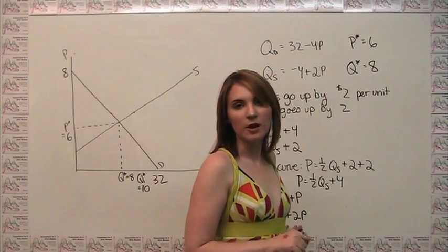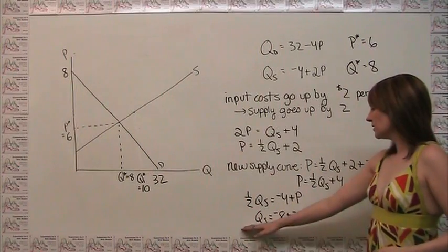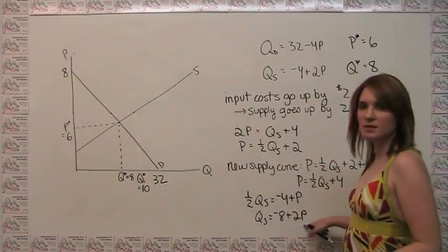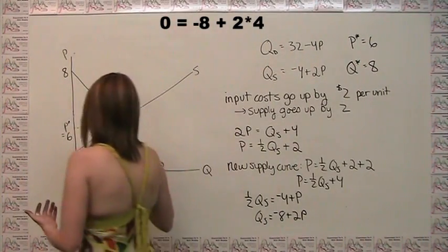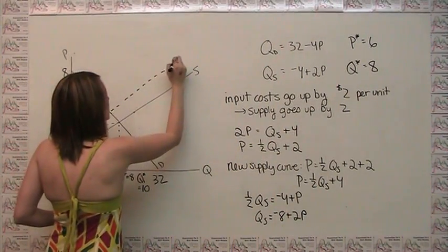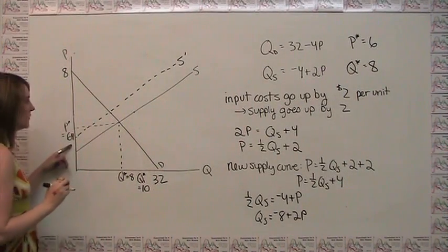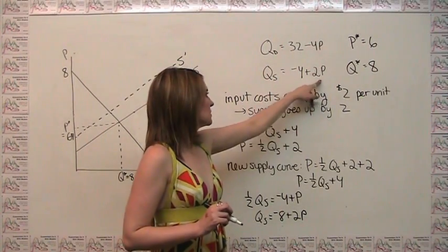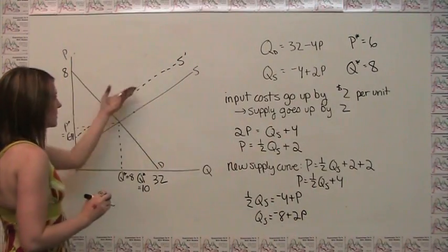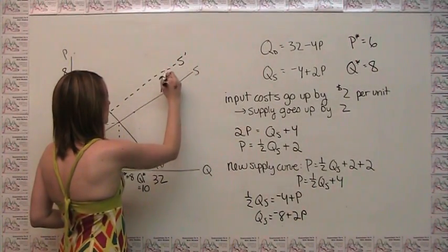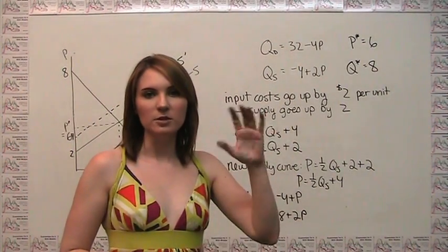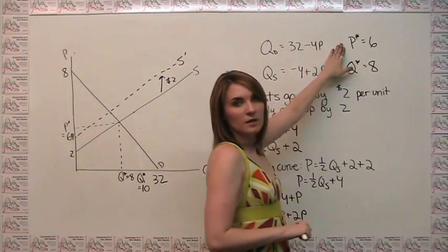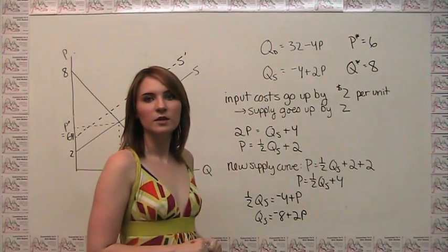We can confirm we did this correctly by graphing it. If quantity supplied equals negative 8 plus 2p, the supply curve starts where quantity supplied equals 0, so where negative 8 plus 2p equals 0, or where p equals 4. That makes sense — the original supply curve of negative 4 plus 2p started at p equals 2, and now we've shifted it up by $2 to start at p equals 4. Just be careful to differentiate between vertical shifts and horizontal shifts. Now we already have our old equilibrium from earlier, so all we have to do is take the new supply curve and the original demand curve and find the new equilibrium.